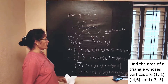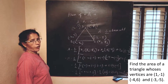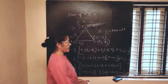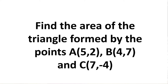So 24 square units. This is the method. Let me do the second one. Second: find the area of the triangle formed by the points A(5, 2), B(4, 7), C(7, −4).